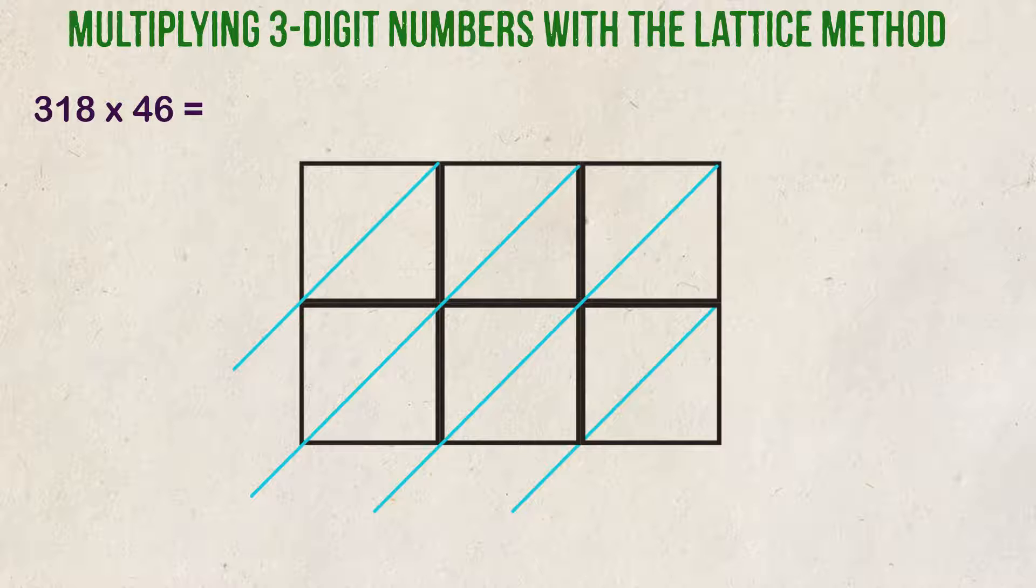Example one, what is 318 times 46? First, we need to set up the problem correctly. The first number is three digits, so we're going to draw three boxes like this. The second number has two digits, so we make sure we have two rows of the same boxes.